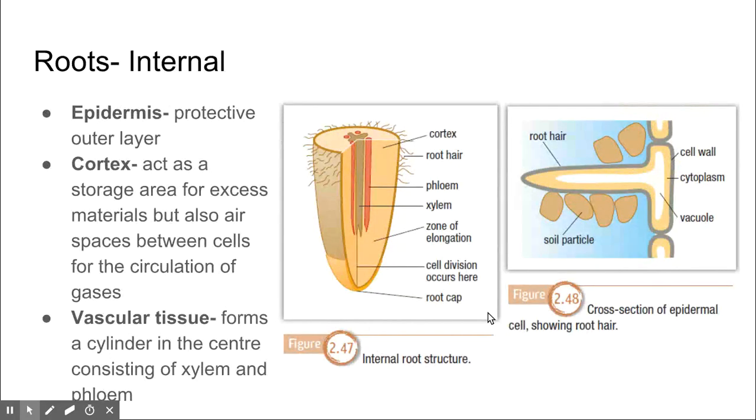Internally, roots have a few different layers and structures which allow them to complete their functions. We have the epidermis, which is the protective outer layer. We then have the cortex, which is the storage area for excess materials, but also provides space where gases can circulate. Then we have the vascular tissue, which forms a cylinder in the center, that X-like structure in figure 2.47. This contains xylem and phloem, which we'll look at in more detail in one of the coming videos.